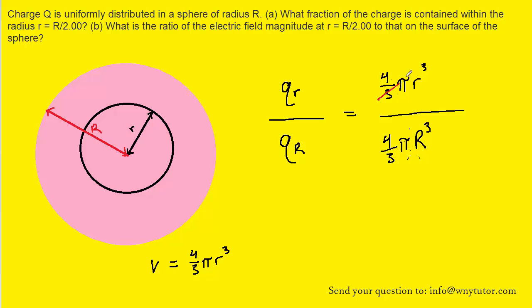Now, of course, the 4 thirds pi's are going to cancel out. And what we can next do is remind ourselves from the given information that lowercase r was equal to R divided by 2. So we can actually come in here and replace lowercase r with that value, capital R divided by 2.